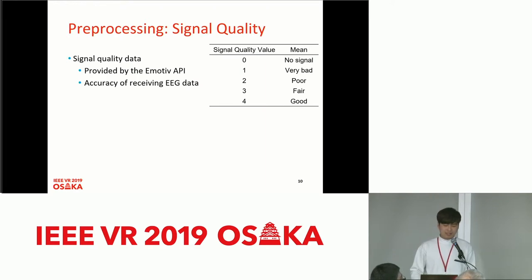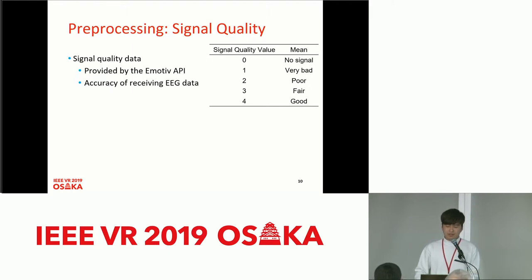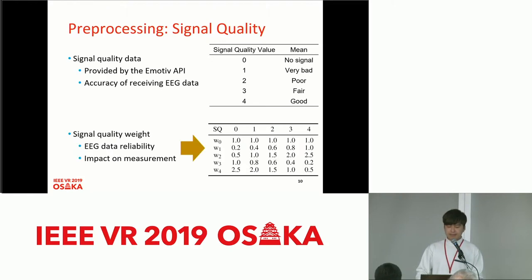We utilize the API provided by Emotiv to measure the signal quality data, sensing the accuracy for each channel. The signal quality data is an integer from 0 to 4 for each channel, where each value indicates the accuracy of receiving data. During EEG measurement, the sensor attachment changes frequently as the subject moves, so this condition may not always be perfect for data collection. We are therefore trying to use signal quality to increase the reliability of EEG data.